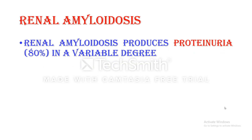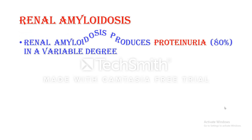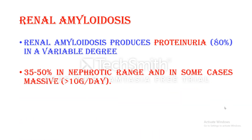Renal amyloidosis produces proteinuria in the majority of cases — in more than 80% of cases — in a variable degree. In 35% to 50% of cases, it is in the nephrotic range, which is about 3.5 grams per day. In some cases it is massive — more than the nephrotic range, up to more than 10 grams per day.